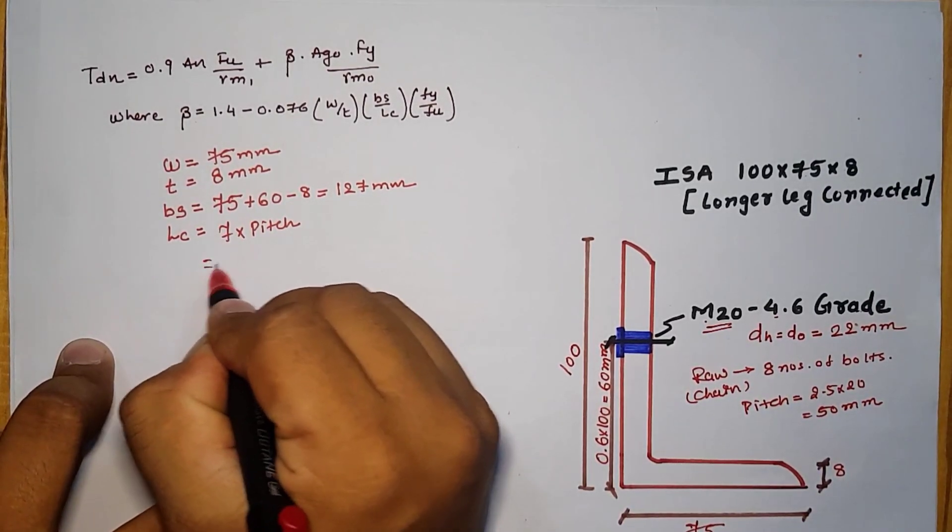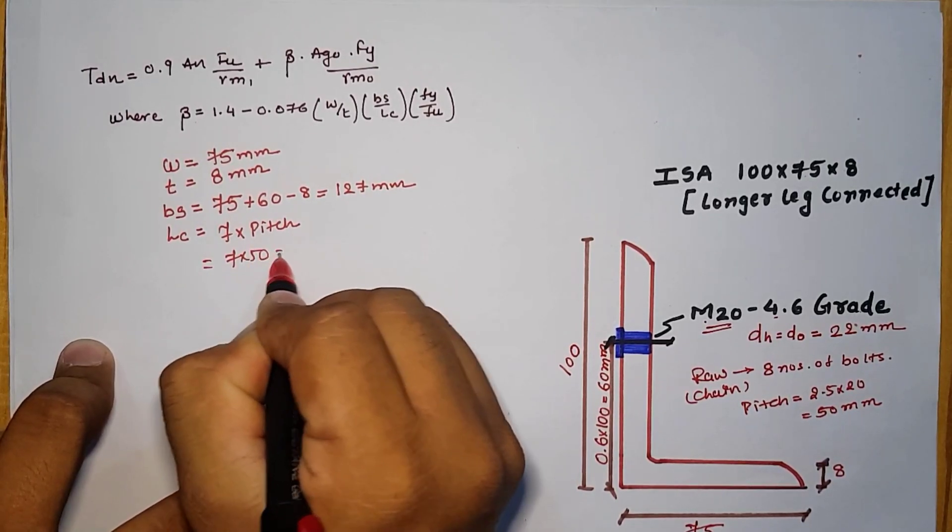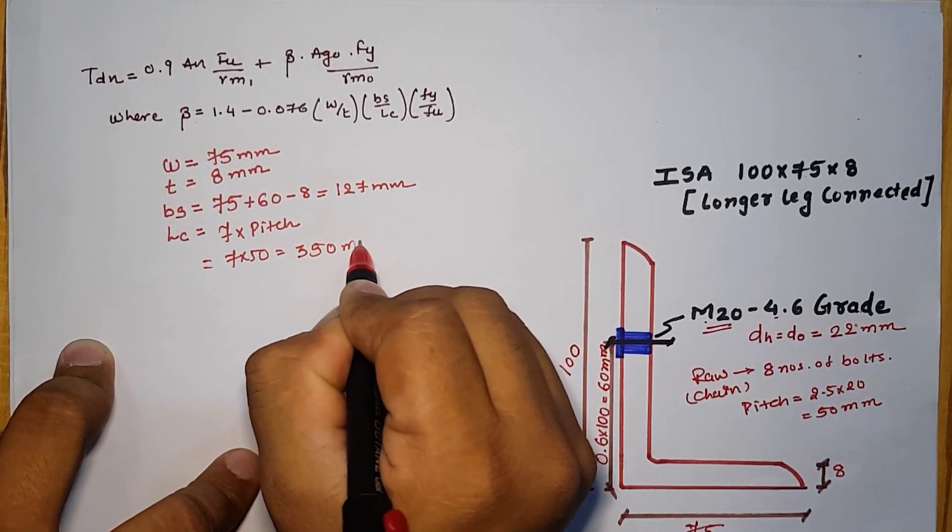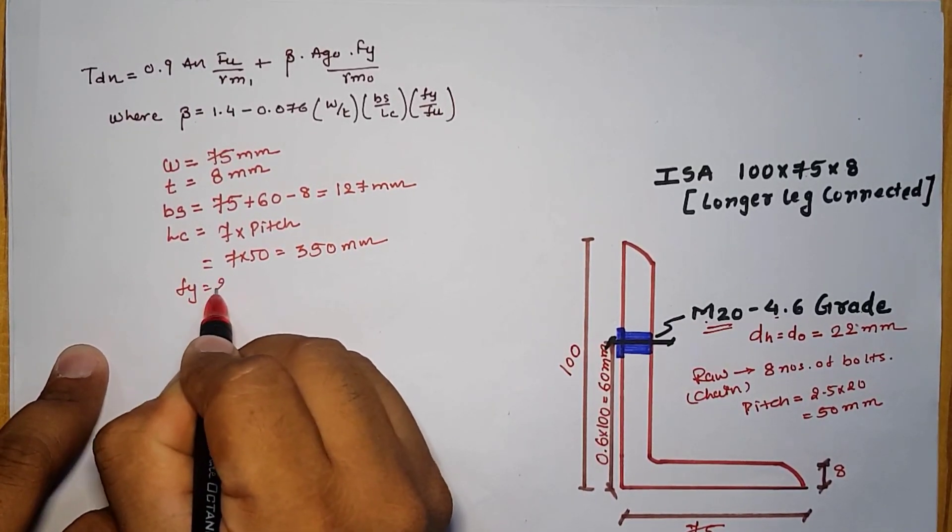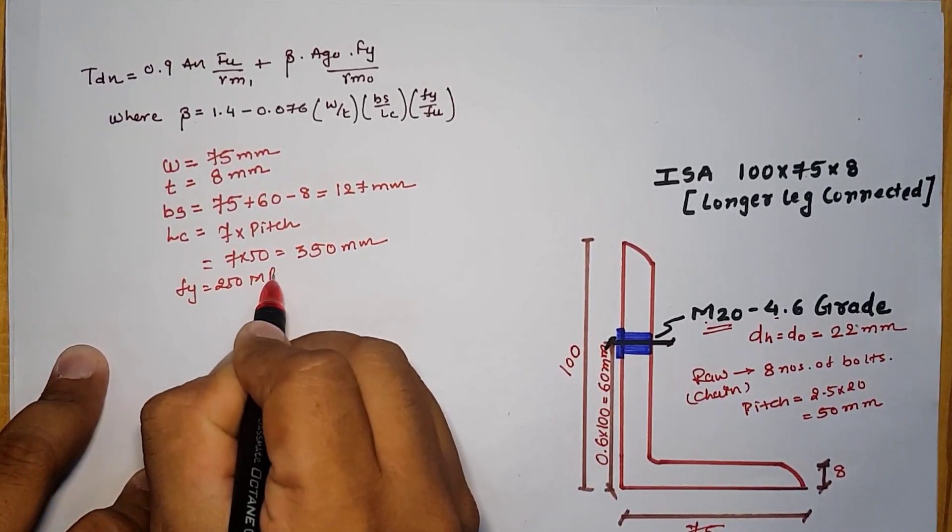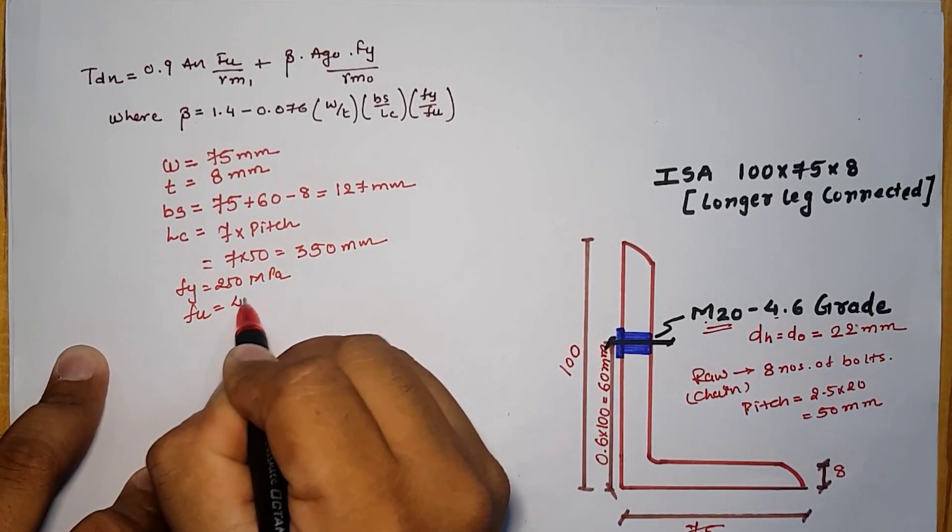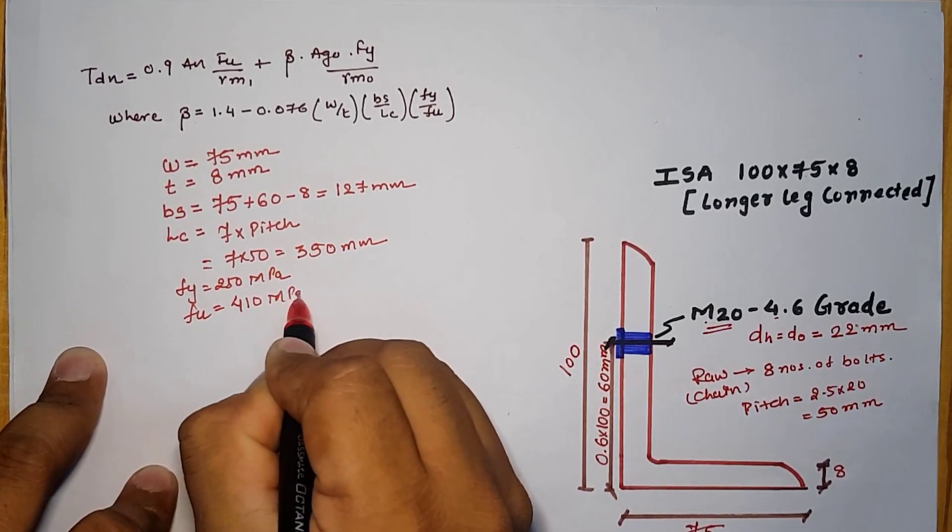The pitch value is the distance between 2 successive bolts in the direction of load. For 8 numbers of bolts, there are 7 pitch. So 7 into 50 which is equal to 350 mm. Next one is Fy which is equal to 250 MPa and Fu which is equal to 410 MPa.